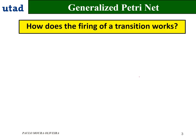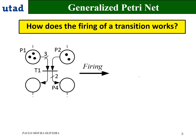How does the firing of a transition work for a generalized Petri Net? In this case, as you can see, we got 3 tokens in P1 and we got 2 in P2, which is more than 1. So T1 is validated. When we fire, we are going to withdraw 3 tokens from P1 and 1 token from P2.